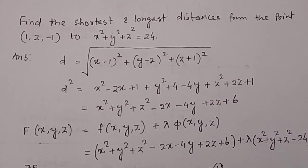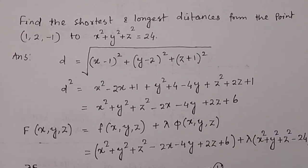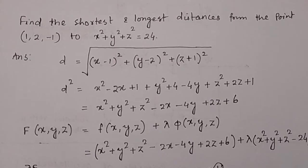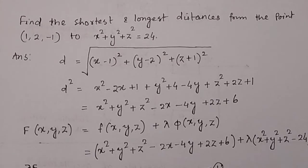Find the shortest and longest distances from the point (1, 2, -1) to the sphere x² + y² + z² = 24.